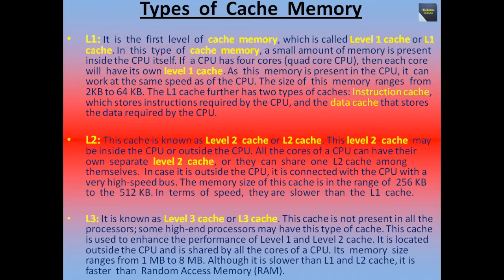Cache memory also has two more types: primary cache and secondary cache. A primary cache is always located on the processor chip. This cache is small and its access time is comparable to that of processor registers. Secondary cache is placed between the primary cache and the rest of the memory, and it is referred to as the level 2 cache. Often the level 2 cache is also housed on the processor chip.